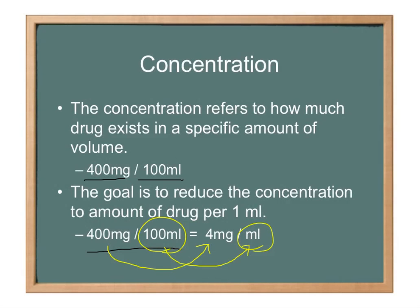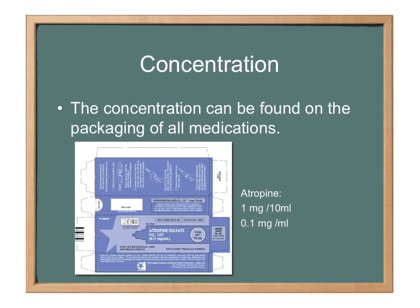A quick note: the correct abbreviation for milliliter is a lowercase m and an uppercase L. I don't want to get you in trouble on any tests if your teacher is looking at abbreviations. As for where to find concentration — if you look at the drug packaging on the box or the vial itself, it will tell you. This box of atropine tells you that you have 1 milligram per 10 mLs. Dividing both by 10, you get a reduced concentration of 0.1 mg per mL for that pre-filled syringe.